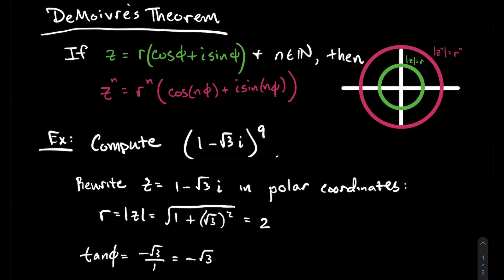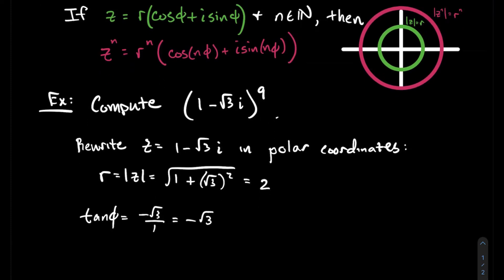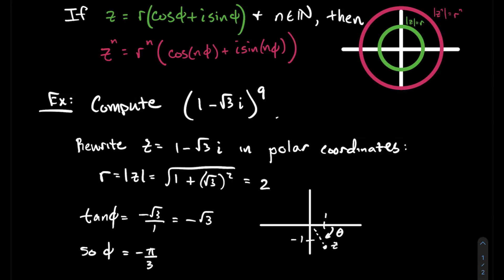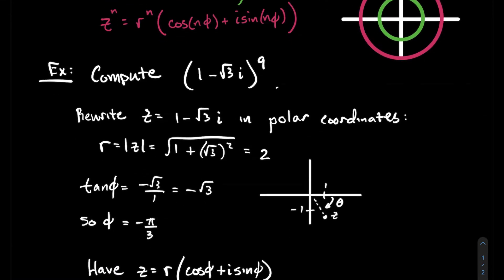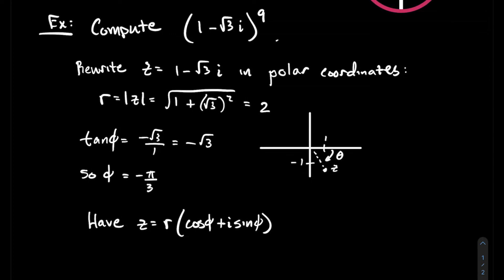Now you need to find what the argument of z is — what's that angle that corresponds to z? We know that tangent of phi should be y over x. In my case, that's negative root 3 over 1. I want to know what angle gives me a tangent of negative square root of 3. We're going to take phi to be negative pi over 3. There are actually two answers, and you need to realize that 1 minus root 3i is in the fourth quadrant, so that's how I know to take minus pi over 3 as my angle. So z in polar form is 2 times cosine of minus pi over 3 plus i sine of minus pi over 3.